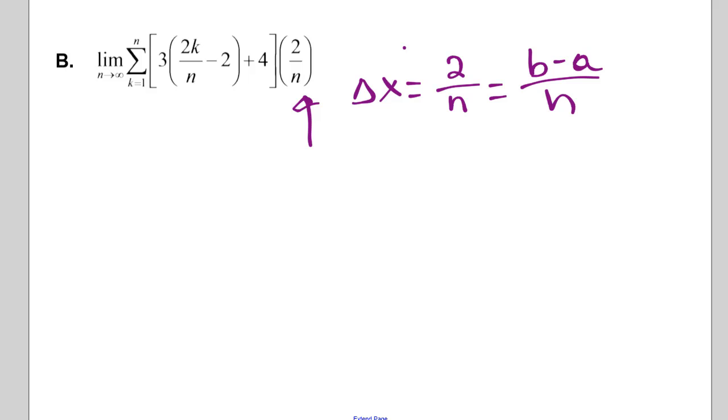Okay, and we can see in this one that a for us is going to be negative 2. Okay, let's break this down a little bit.